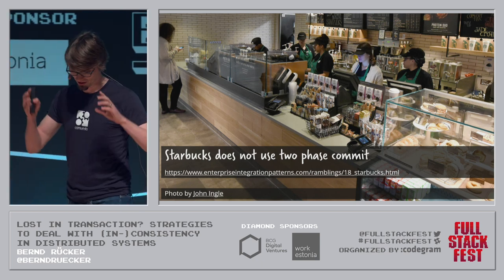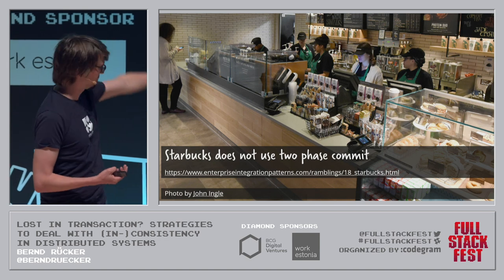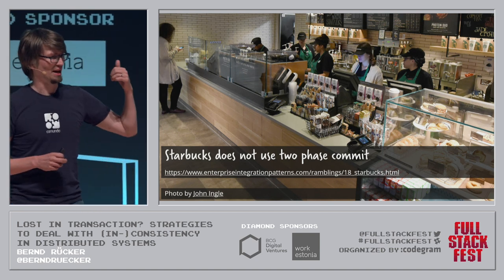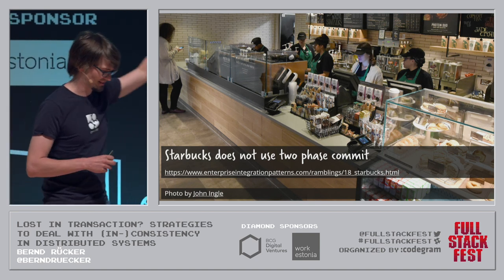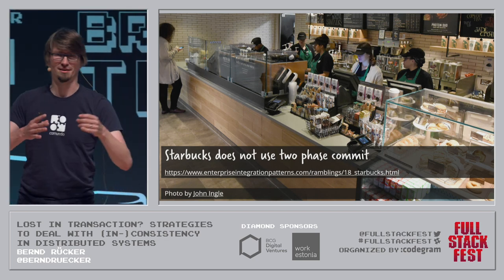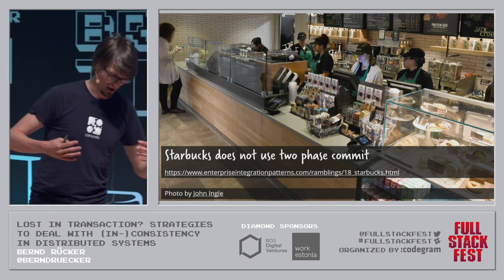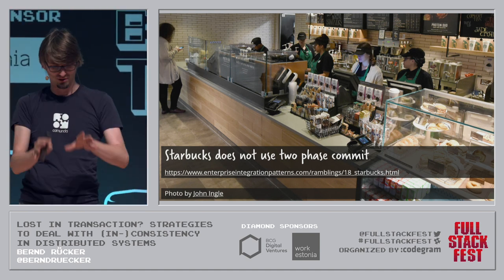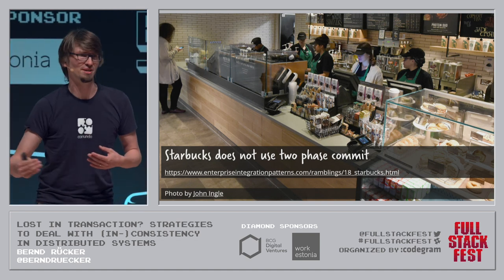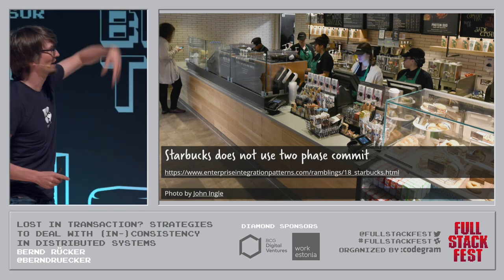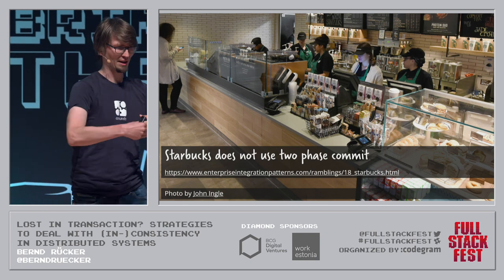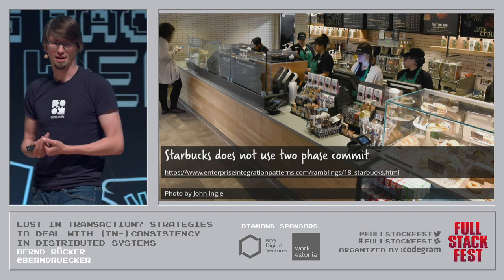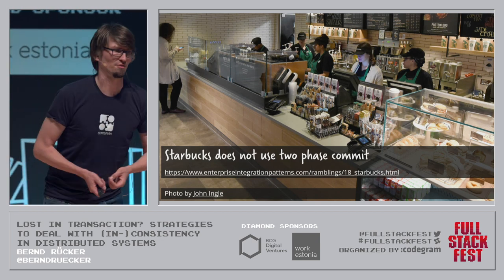Gregor Hoppe, who wrote the Enterprise Integration Patterns book, wrote that 'Starbucks does not use two-phase commit.' He explains that two-phase commit doesn't scale. In an old-school bakery, everybody queues while the coffee is made. If you order 10 coffees, people will hate you. Starbucks just takes the order, has a queuing mechanism, baristas make the coffee, you have a correlation ID — your name on the receipt — and you get your coffee at the end. That scales much better. So don't use these distributed transactions.